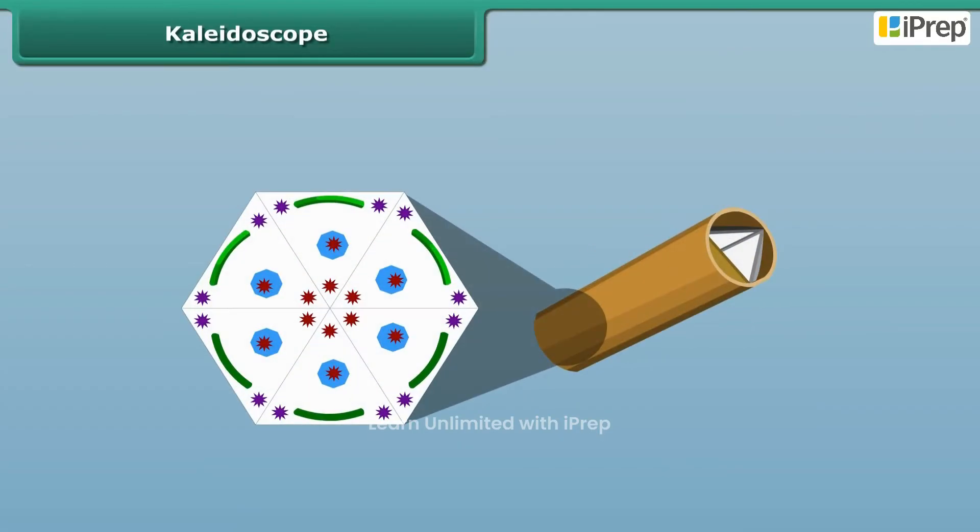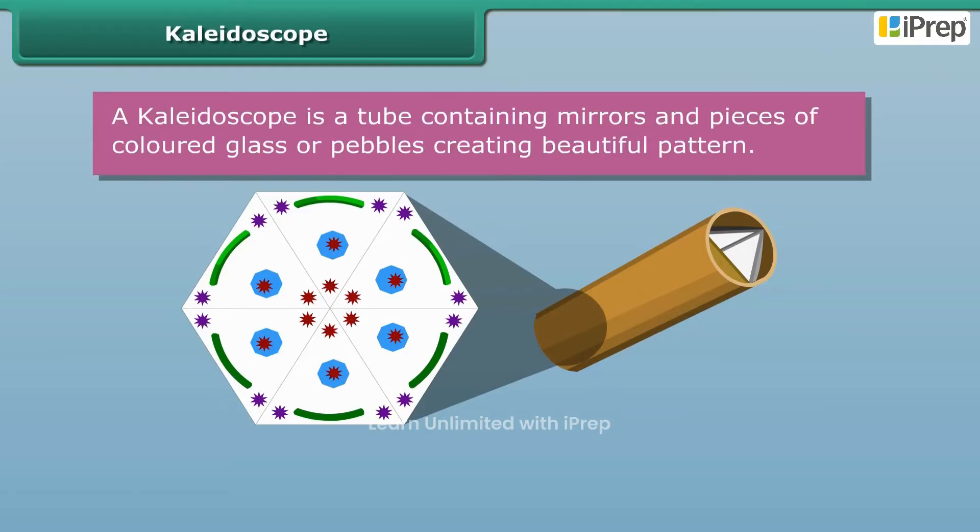What is a kaleidoscope? It is a tube containing mirrors and pieces of colored glass and pebbles. As the viewer looks into one end, light entering the other end creates a colorful pattern due to the reflection of the mirrors when rotated.